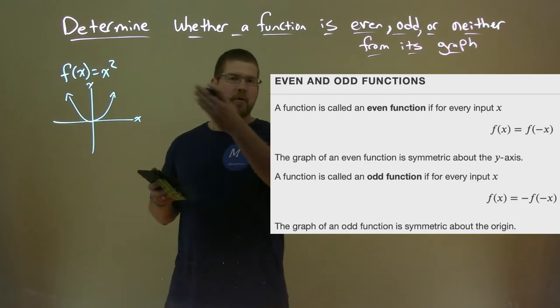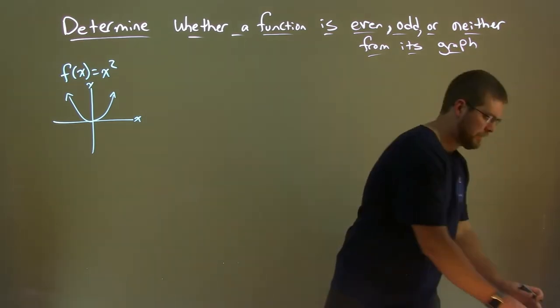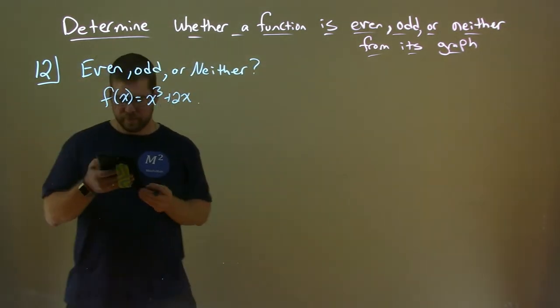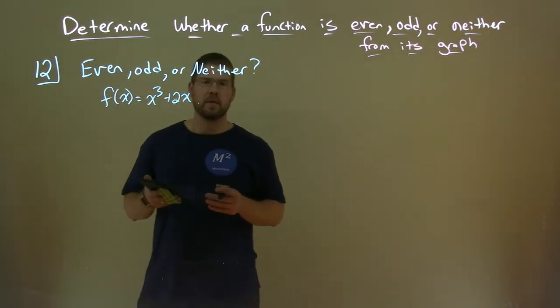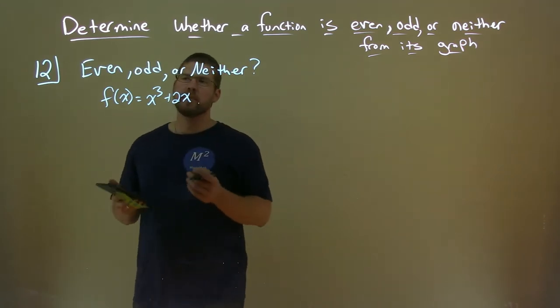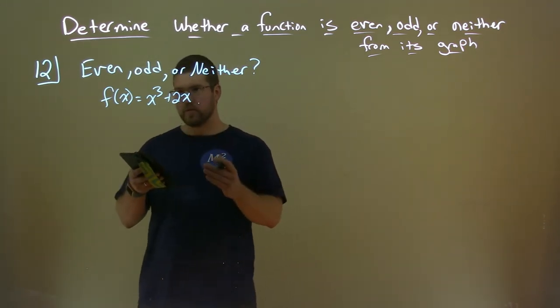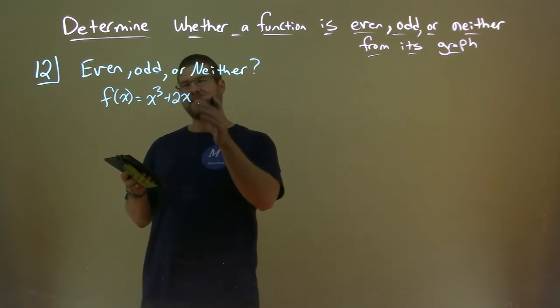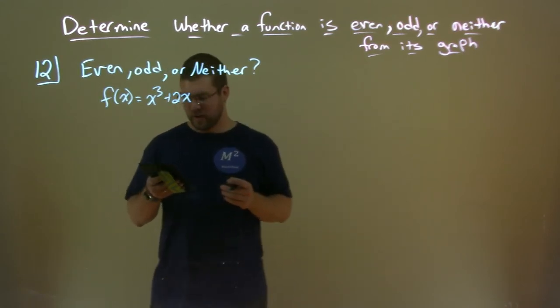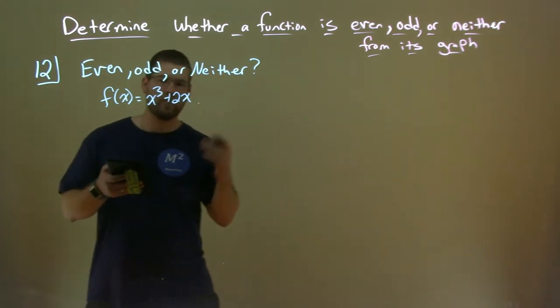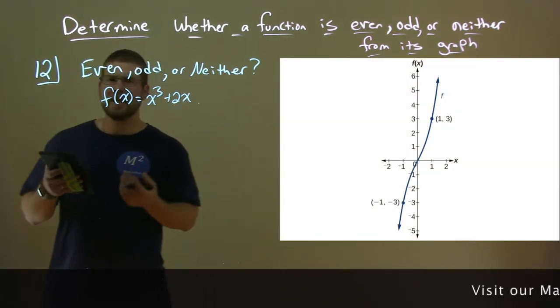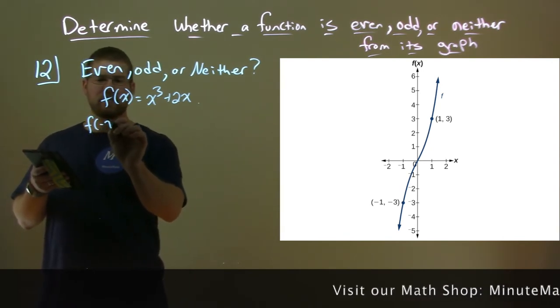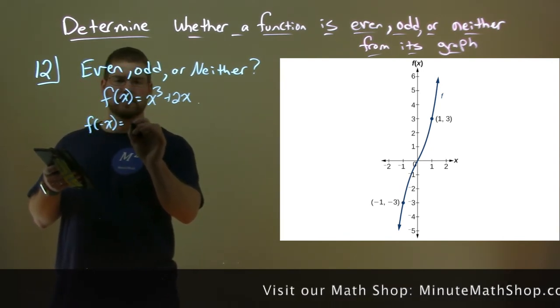So I'm going to erase this and we'll go into our example. We're given this problem: Is f(x) = x³ + 2x even, odd, or neither? We can see that on the graph right here. Let's first look at even.